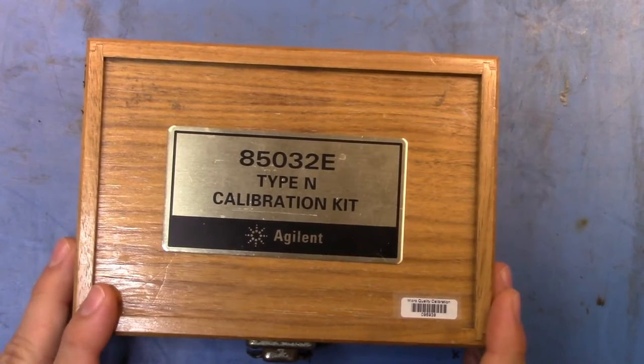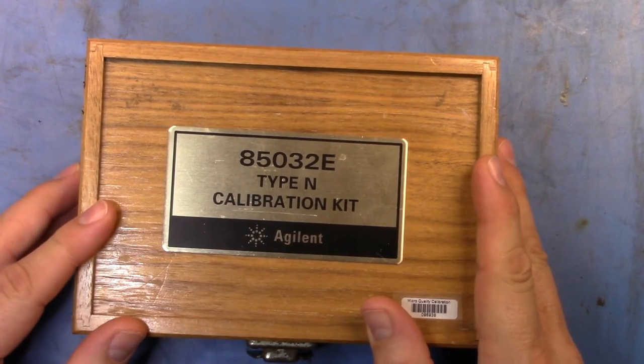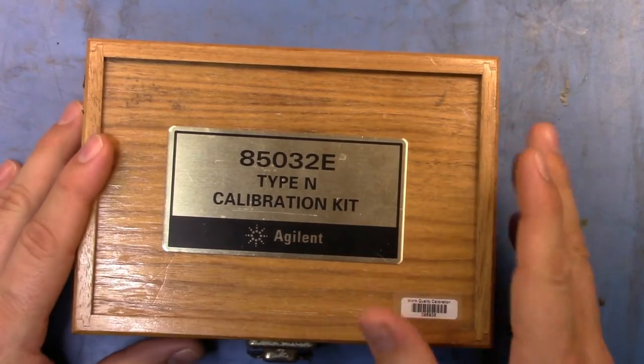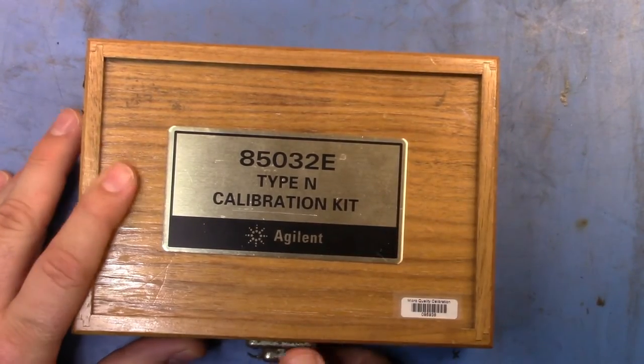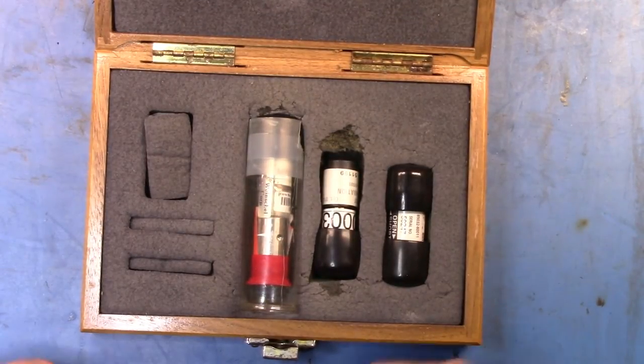Good evening. Just wanted to do a quick video on some RF loads that I've got, 50 ohm loads. I picked up an 85032E, which is the economy type N calibration kit off eBay to help calibrate my network analyzer.